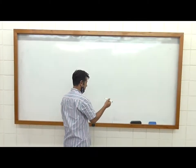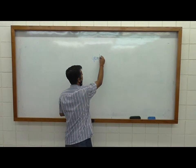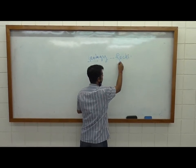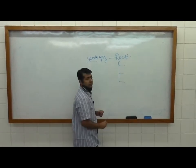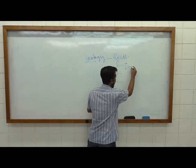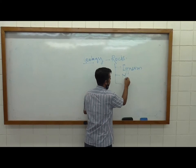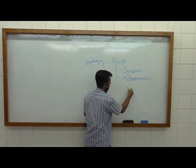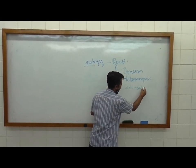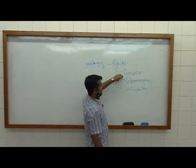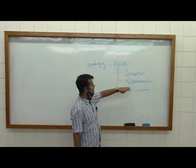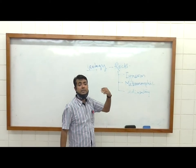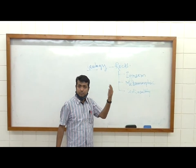Geology is all about the rocks and we have three types of rocks. One is igneous, one is metamorphic, and the other one is sedimentary. Igneous rock is that which forms from the magma or the lava. Sedimentary rock is the rock which is formed by the physical and mechanical weathering of the parent rock.